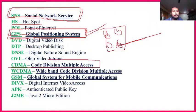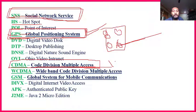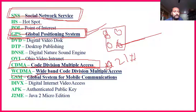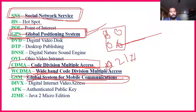CDMA — Code Division Multiple Access — is related to SIM. When you activate a new SIM for the first time, you call a number like *121#, they respond, and you type 1 or 2 to change language or activate — all this comes under CDMA. GSM — Global System for Mobile Communications — is one system throughout the globe to control mobile communications. You should know this.